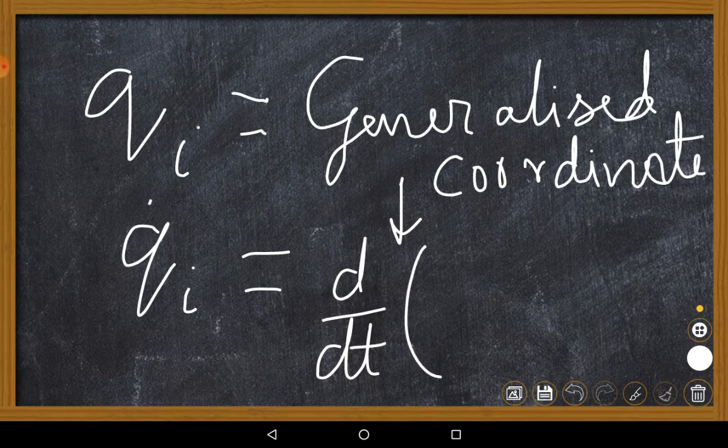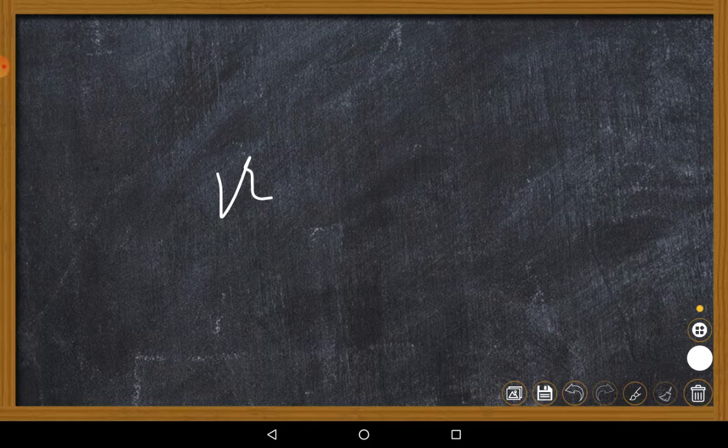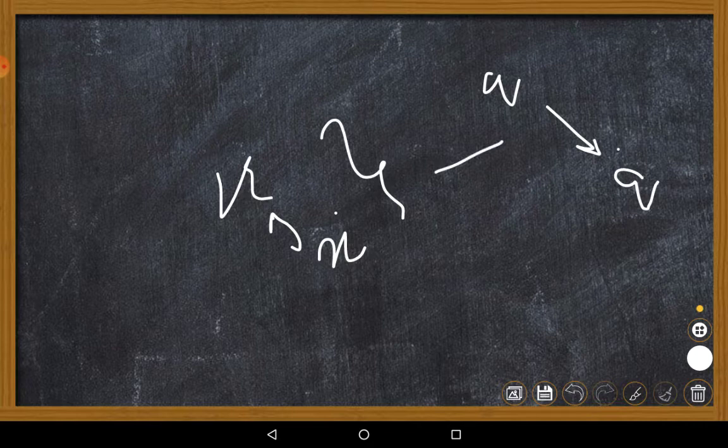I can give you a vague analogy: suppose our generalized coordinate is the Cartesian coordinate x-axis, so one of the coordinates to represent any particle in space is x. Then x-dot is the velocity corresponding to x. This is how we can relate q and q-dot — this is just an analogy to give you a brief idea. There are much deeper meanings, but some more basic things must come before we go into this terminology.